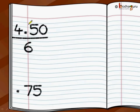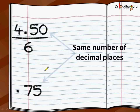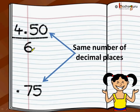There are 2 digits after the decimal point in the dividend, so 75 will become 0.75. So 4.50 rupees is the cost of 6 candies, meaning every candy costs 0.75 rupees, or in other words 75 paisa. It's very simple: first remove the decimal point, do the division, and then add the decimal point with the same number of decimal places as the dividend.